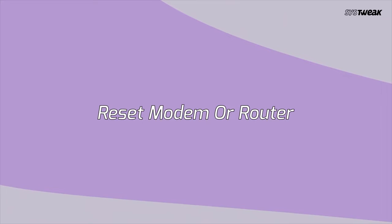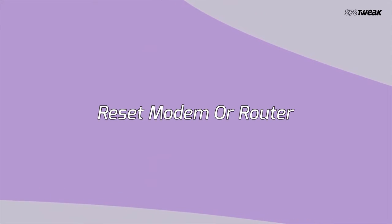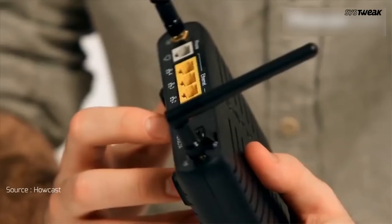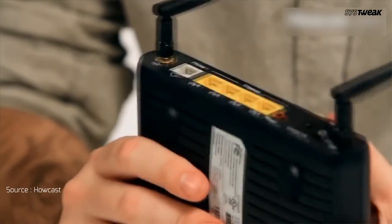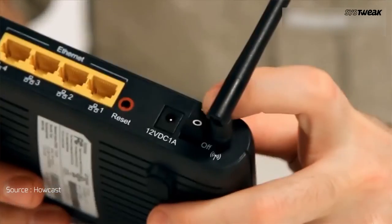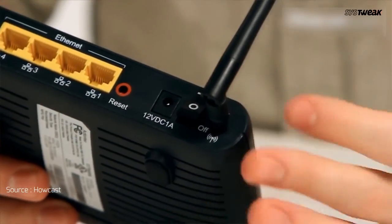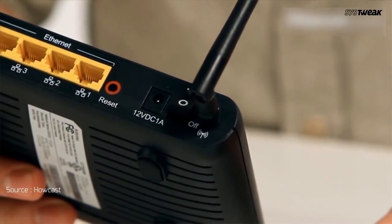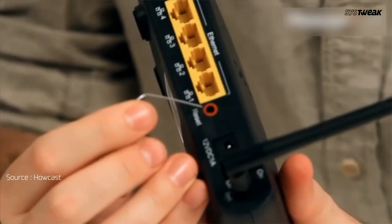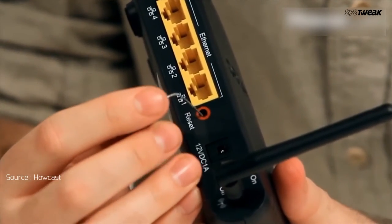Next is to reset the modem or router. For Wi-Fi not showing up on the laptop, there might be a problem with the router's end and not your PC or laptop. So first, try to turn the switch off and then turn it on. Wait for a few seconds and check again. If your computer or laptop is still not showing Wi-Fi, then consider resetting the router or modem.